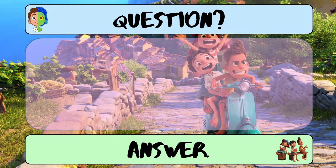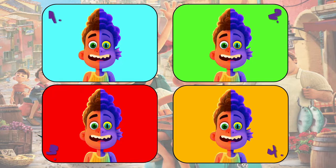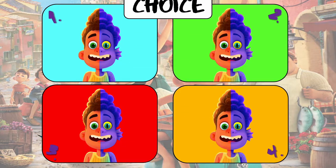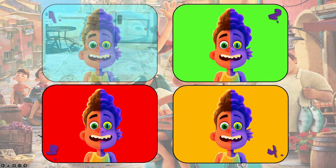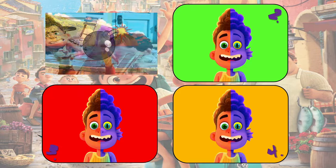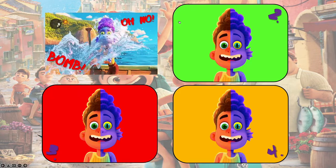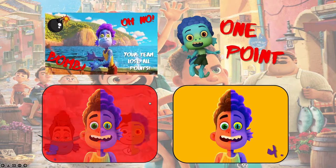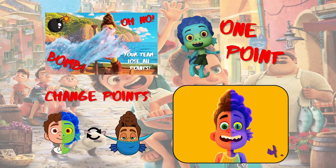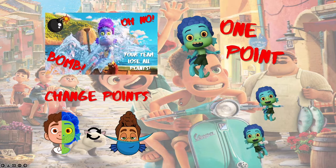Next I'm going to choose question number six. It's a template question and answer, then click forwards. This time we have the choice slide — one, two, three, and four — with that funky Italian music. To reveal the points, click on the color within the rectangular box, not on the character but within the colored part. Number one is the bomb, number two is one point, number three on the red is change points, and number four is five points.